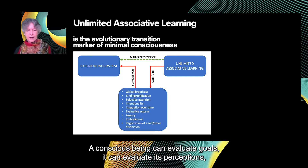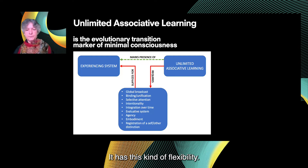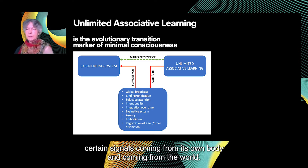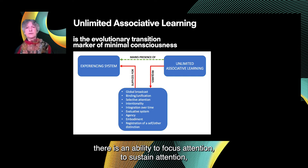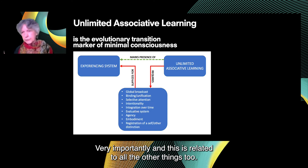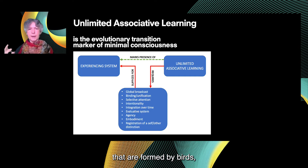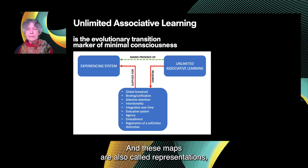A conscious being can evaluate goals, evaluate its perceptions, evaluate its own actions, and change its evaluations according to circumstances — it has this kind of flexibility. It can also selectively exclude or amplify certain signals from its own body and from the world. So there is selective attention: the ability to focus attention, to sustain attention, to shift attention, that conscious beings all have. Very importantly, a conscious being not only integrates information — it maps signals from the world and the body and creates cognitive maps. One example is the spatial maps formed by birds, bats, and rats.